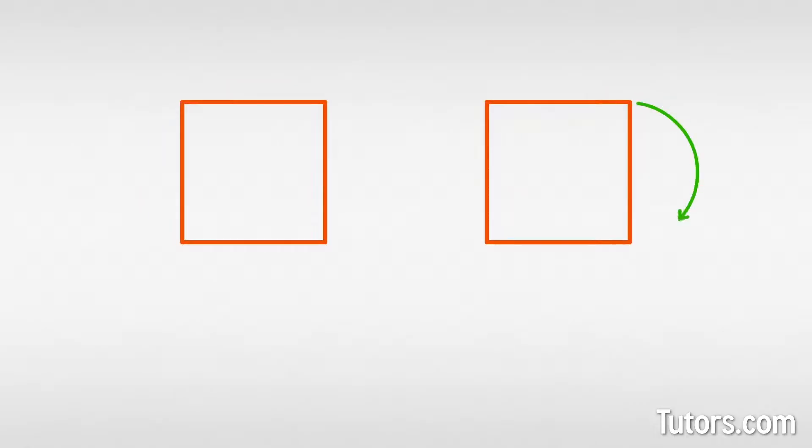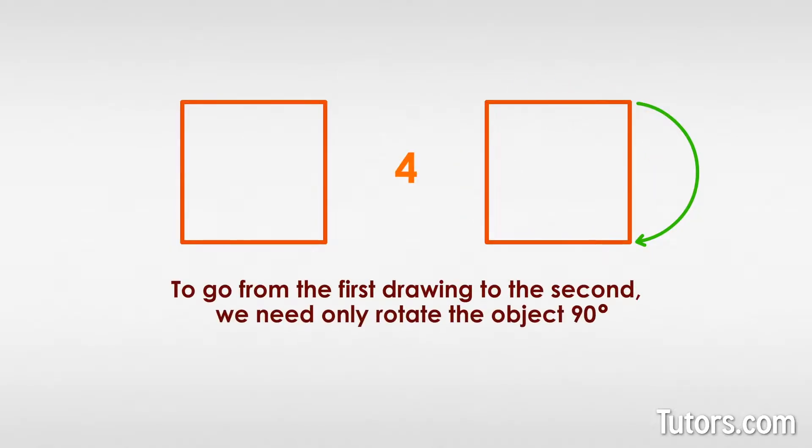Can you figure out the order of rotational symmetry for the square shown? To go from the first drawing to the second, we need only rotate the object 90 degrees. We can do that 4 times, so a square has order 4.